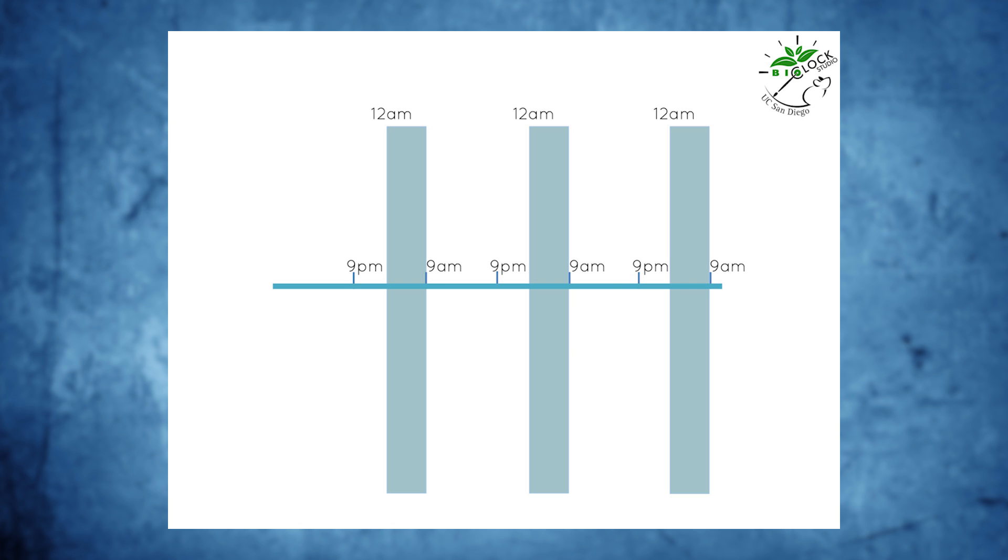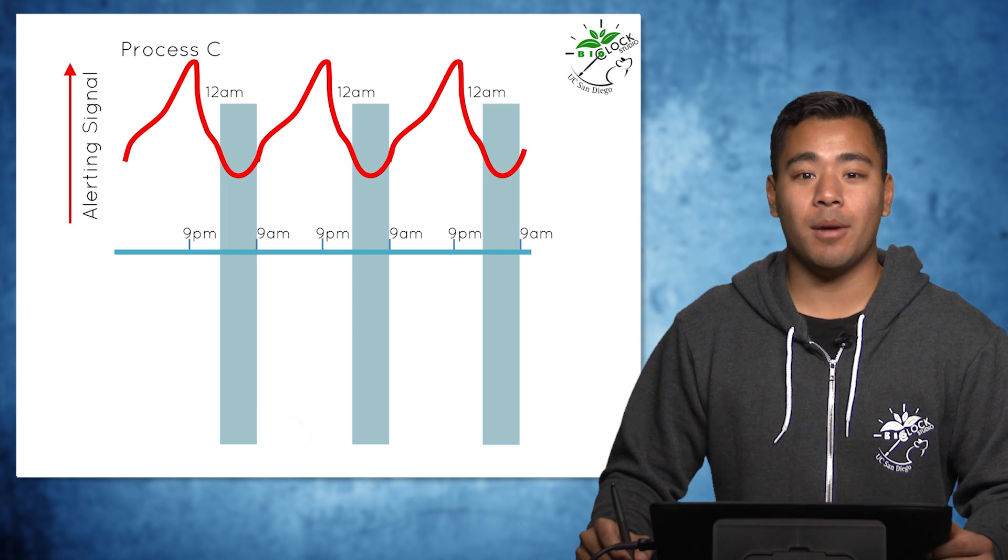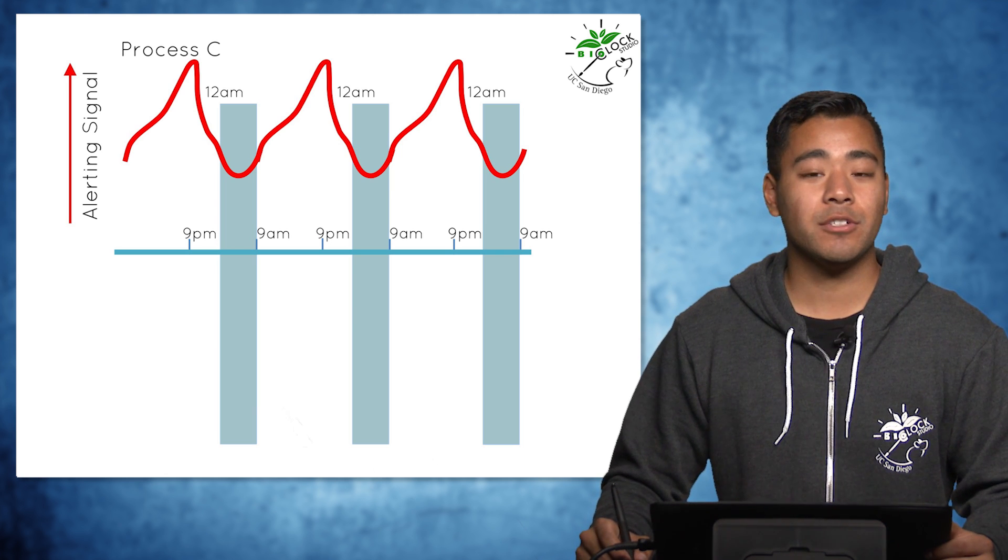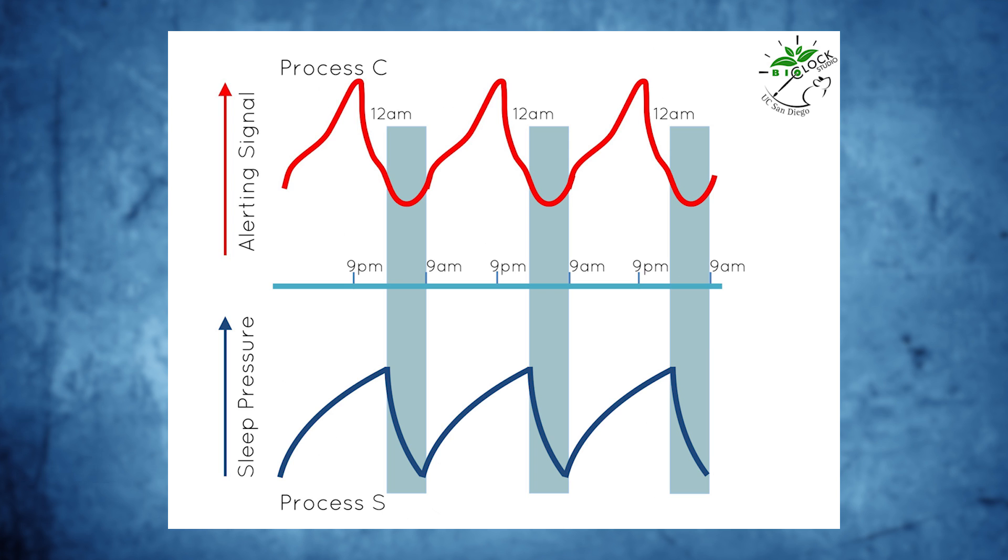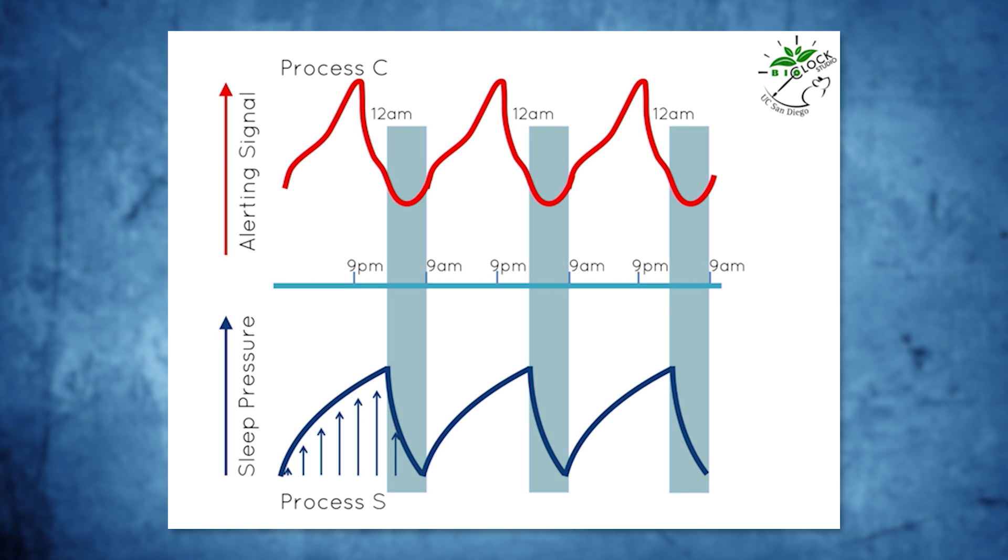With these two processes, we see how a normal sleep-wake cycle is formed, assuming the person sleeps around 12 am to 9 am. The circadian clock provides a daily cycle of alerting signal, which encourages wakefulness during the day and sleepiness during the night. Working against the circadian alerting signal is the homeostatic sleep pressure, which builds up while the individual is awake and is alleviated when the person sleeps, as shown here in the blue arrows.